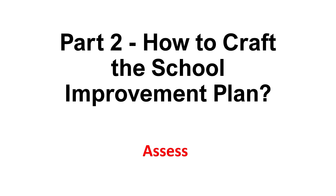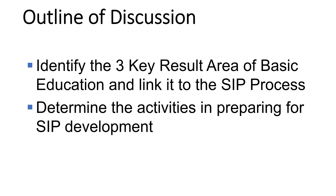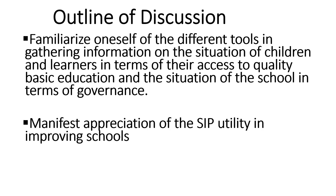Welcome to part two of how to craft the school improvement plan. We are making this video for our principals test reviewers. We would like to invite you to watch part one in case you have missed it. For this time, we're going to discuss the following: identify the three key result areas of basic education and link it to the SIP process, determine the activities in preparing the SIP development, and familiarize ourselves with the different tools in gathering information on the situation of children and learners in terms of their access to quality basic education and the situation of the school in terms of governance.